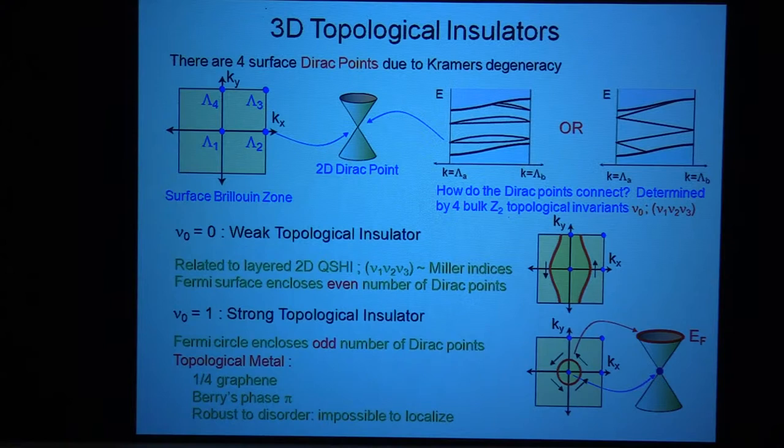So it turns out, in fact, there are four Z2 topological invariants that summarize the topological structure of a three-dimensional crystal and tell you whether the picture looks like this or this on any surface.